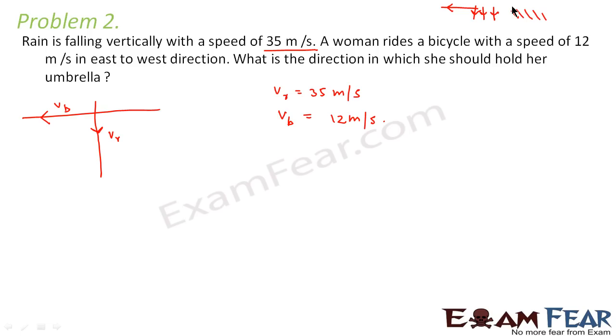You try to think of this situation practically. When you are moving forward and rain is falling in this direction, you feel as if the rain is falling in the backward direction. So that means the woman would feel that the rain is falling somewhat in this direction. So what is this? This is nothing but the relative velocity of the rain with respect to the bicycle.